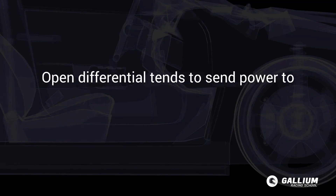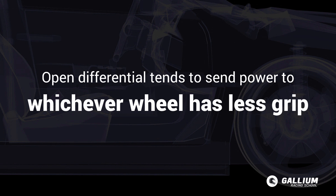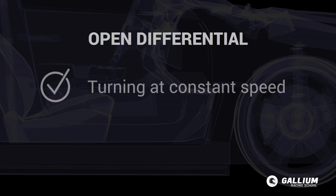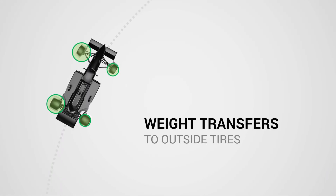The problem with a completely open differential is that it tends to send power to whichever wheel has less grip. The open diff allows maximum traction when the car is turning at a constant speed, but it can actually lose acceleration when turning. In a turn, weight is transferred to the outside tyres, which means the inside tyre will have less grip.